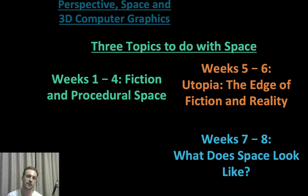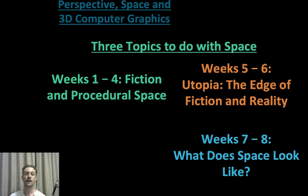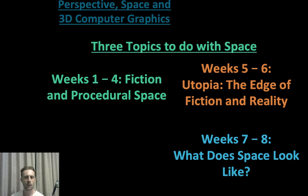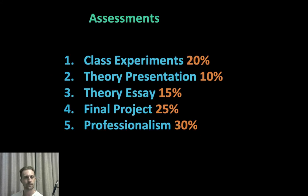So these are the three topics of the theory part of the course. Weeks one to four, we'll look at fiction and procedural space. Weeks five to six, we will look at utopia — the edge of fiction and reality. And weeks seven and eight, we will look at what does space look like.